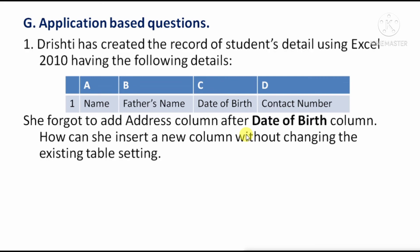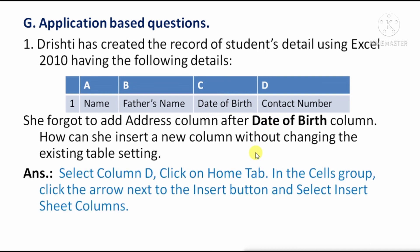Application based questions. First question: Drishti created a student detail record in Excel 2010 with columns for Name, Father's Name, Date of Birth, and Contact — four columns total. She forgot to add an Address column after Date of Birth. How can she insert a new column without changing the existing table settings? She should select column D, click the Home tab, go to the Cells group, click the arrow below the Insert button, and select Insert Sheet Columns.